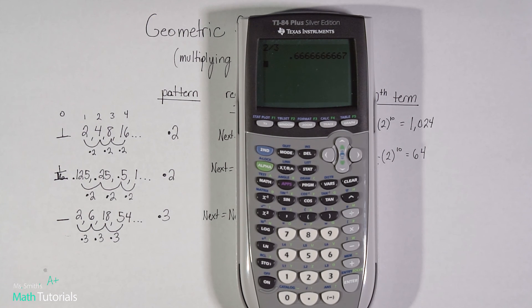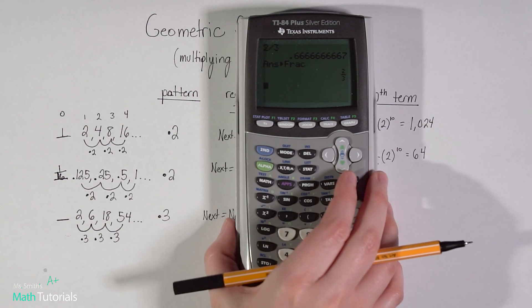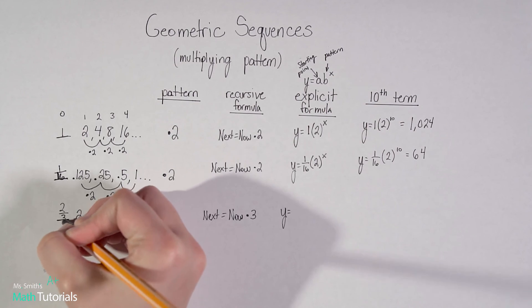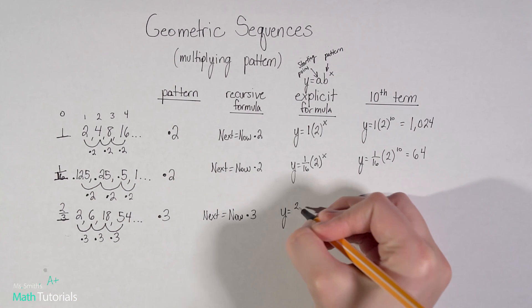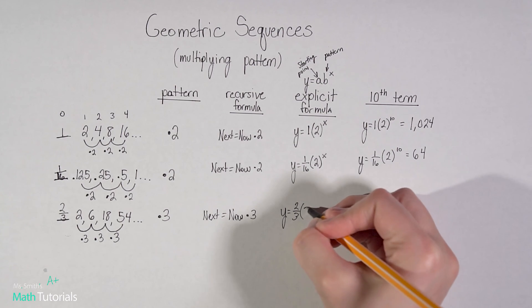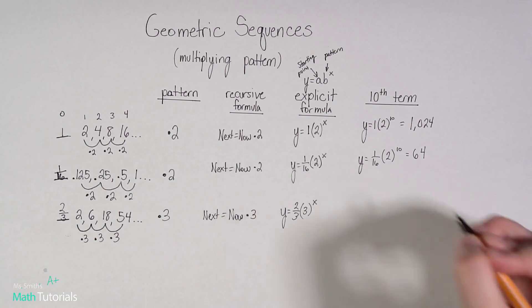I'm going to show you this trick. I'm doing 2 divided by 3. I get this long decimal. I do not want to write 0.6663 repeating. So instead, I'm going to hit math, enter, enter. And I'd rather see it as 2/3. Much easier. So 2/3 times my pattern, b, so 3, to the power of x.